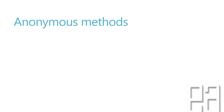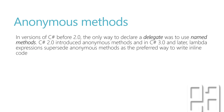Alright, let's get started. Anonymous methods. In versions of C# before 2.0, the only way to declare a delegate was to use named methods, as we did in our previous video where we used a named method for the concrete implementation of PrintValue to call a delegate and perform the operation. But C# 2.0 introduced what is called an anonymous method, and C# 3.0 introduced lambda expressions, which superseded anonymous methods as the preferred way to write inline code.